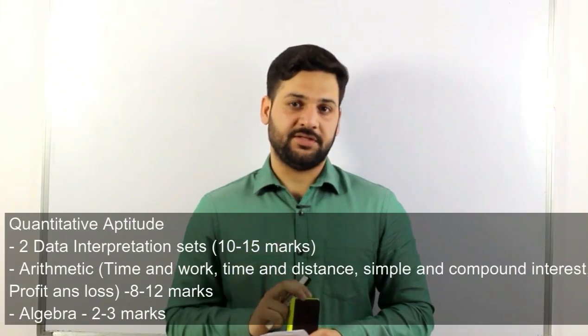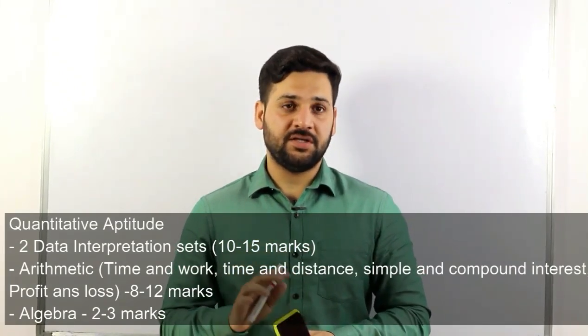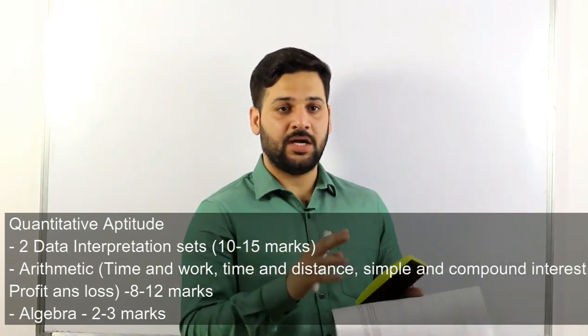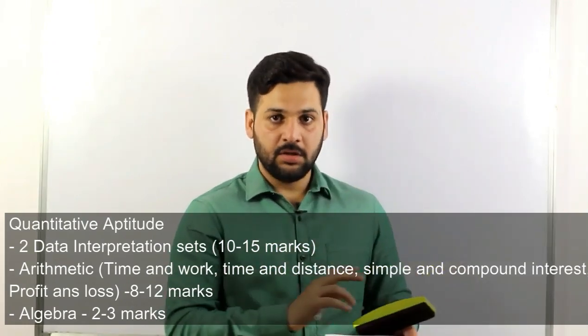Let's start with the Quantitative Aptitude section. In the last few exams I've seen a pattern of topics in QA. Out of the 35 questions, you will see two Data Interpretation sets of five marks each. Most of the time it is a double diagram — a pie chart combined with a histogram or a table.